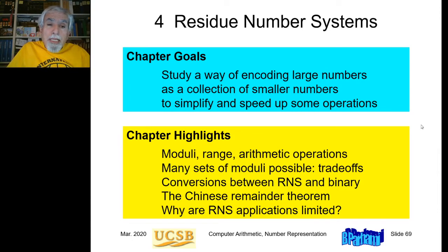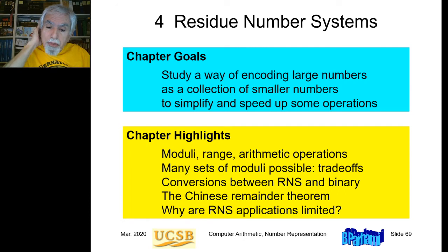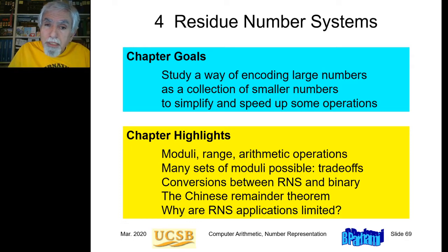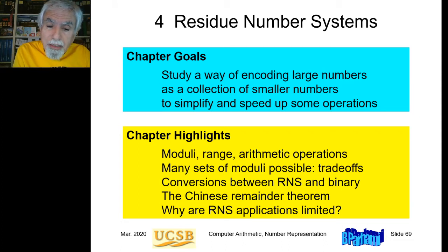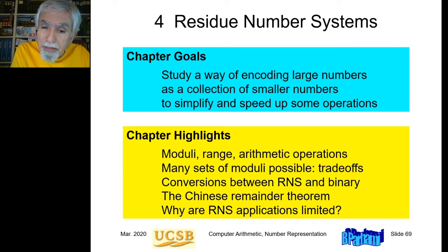Hello, this is the second lecture of the course ECE 252b Computer Arithmetic for spring 2020. The topic is from chapter four of the textbook: Residue Number Systems. This chapter is pretty much self-contained — it's a special way of representing numbers. We review that way of representing numbers and how to do arithmetic on those numbers, and then we don't revisit this particular number representation system in the rest of the course. It's just a self-contained module.